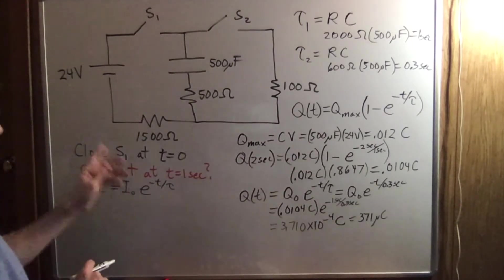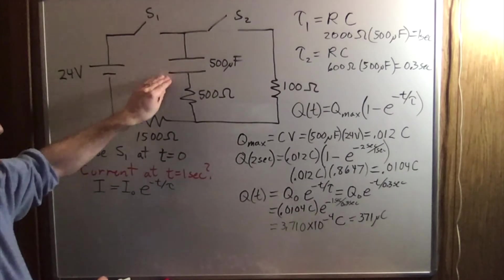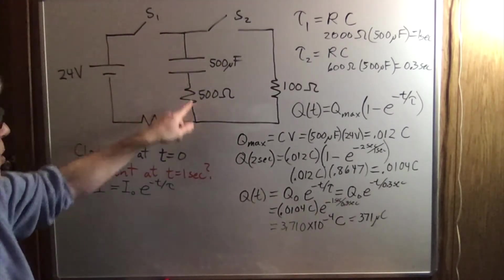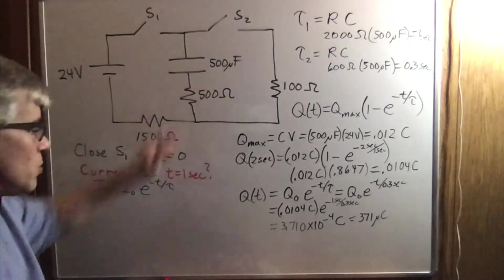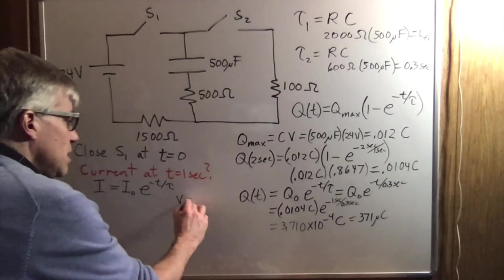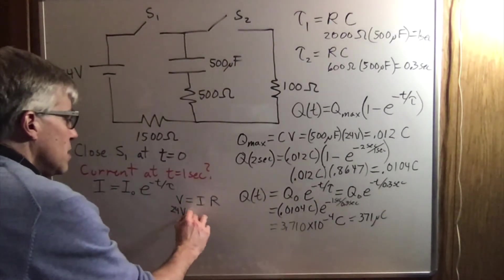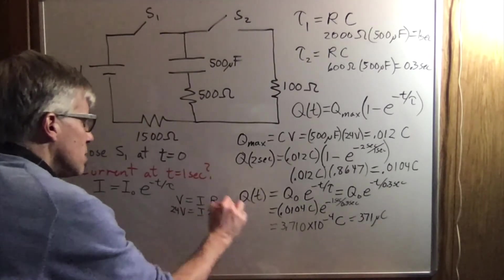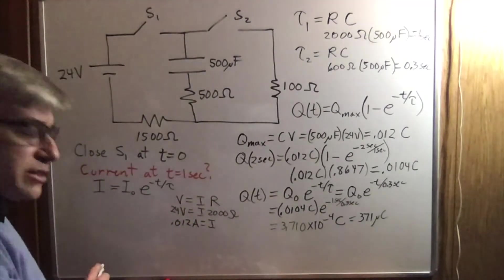Now, what is the starting current? The starting current is when there's no charge on the capacitor. If there's no charge, there's no volts, which means all the volts for the 24 volts are across the 2000 ohms. So V equals IR gives us 24 volts is the current times 2000 ohms. And so that's 0.012 amps. That is the I0.